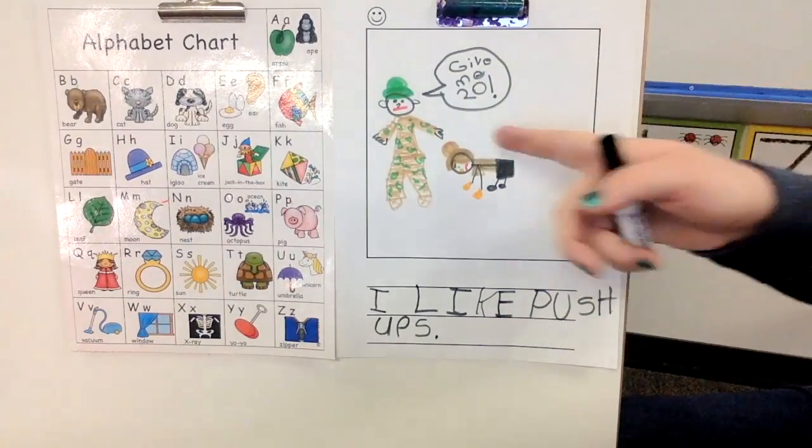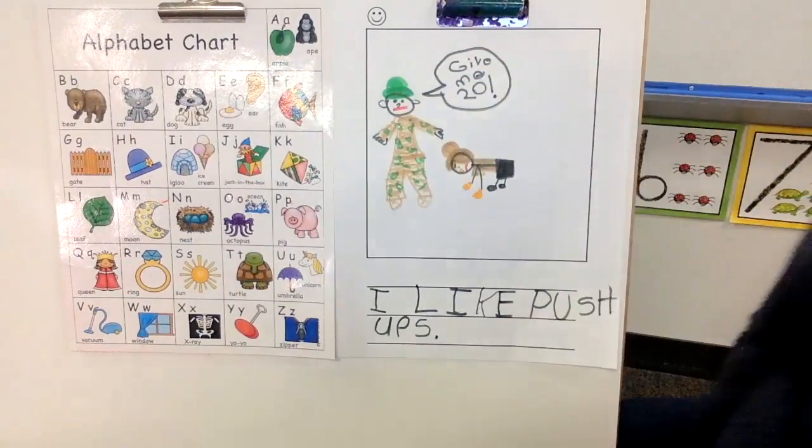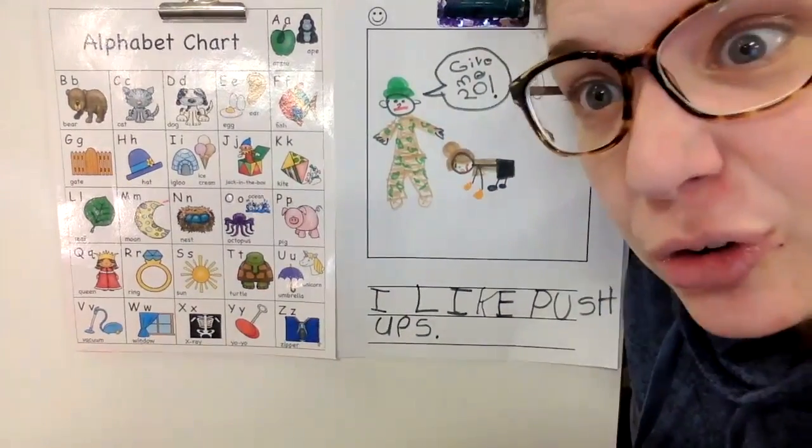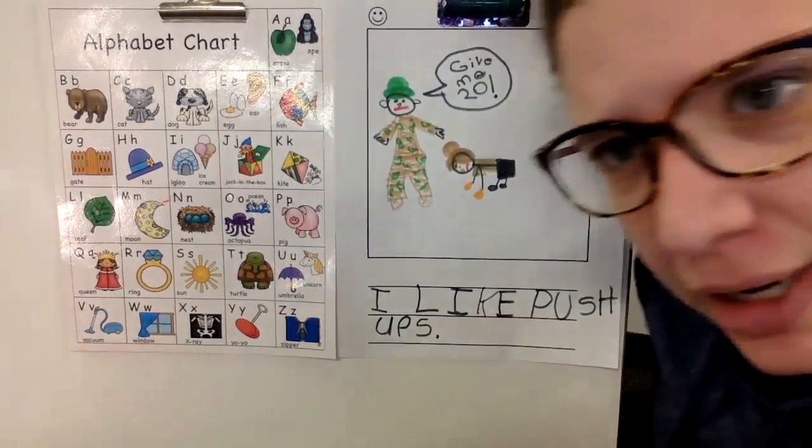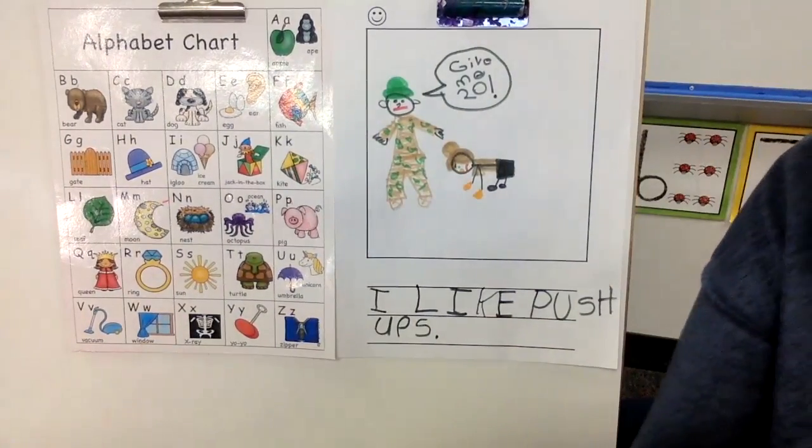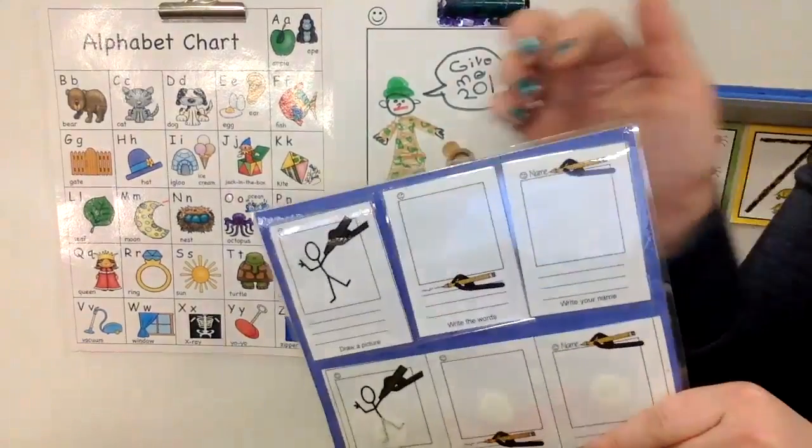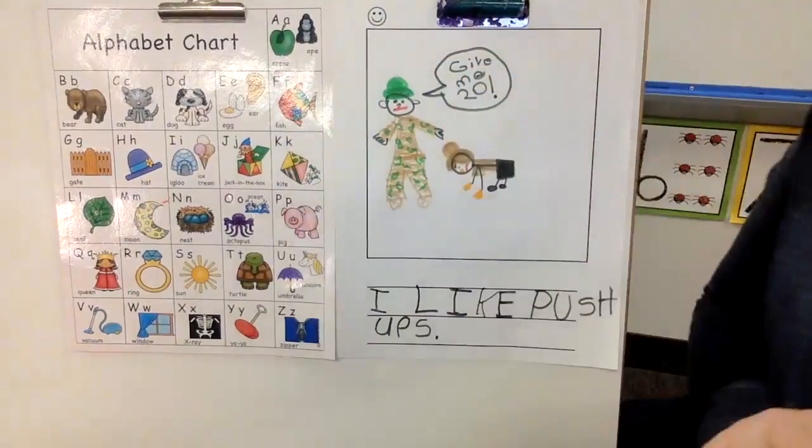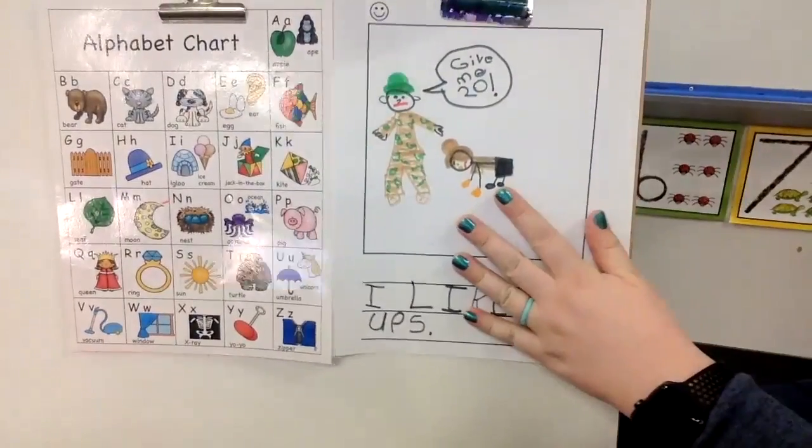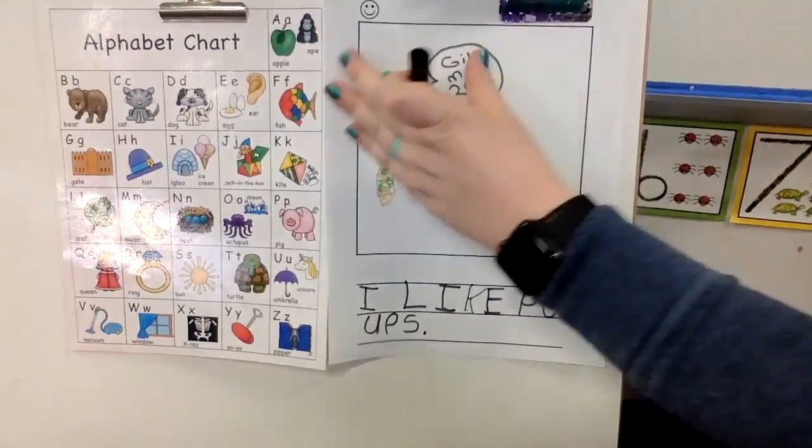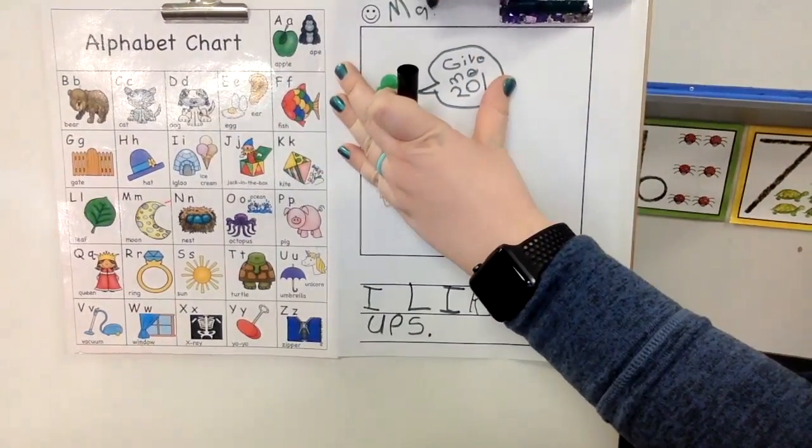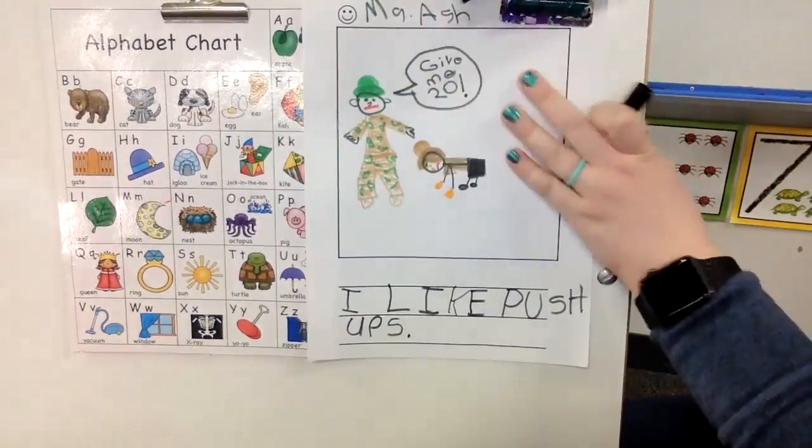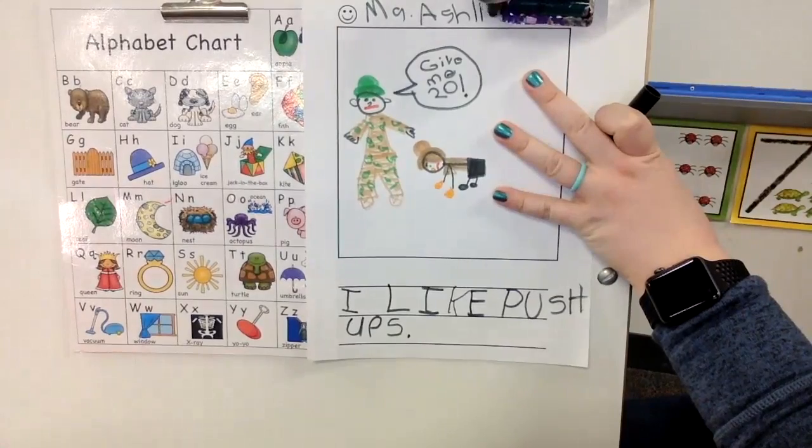So here's my memory. I have give me 20 push ups. Cause that's what I remember from exercising. I remember having to exercise at basic training and the drill sergeants always telling me to do push ups. And then I wrote about it at the bottom. But remember I said there were three steps. First, we draw the picture. We write about the picture and then we write our name. So I'm going to write my name up here at the smiley face. I'm going to write Miss Ashley. And there is my name.